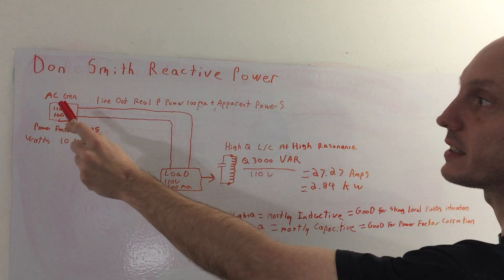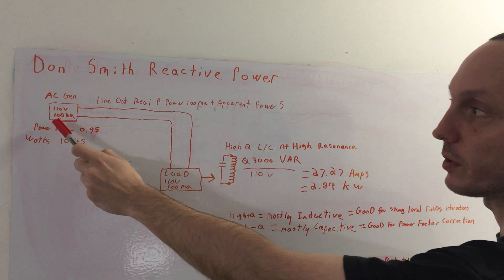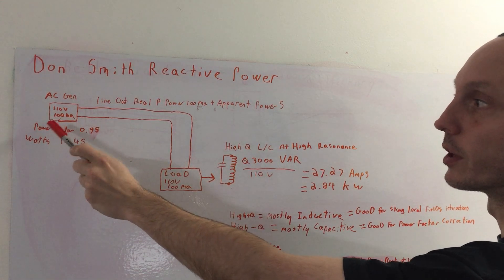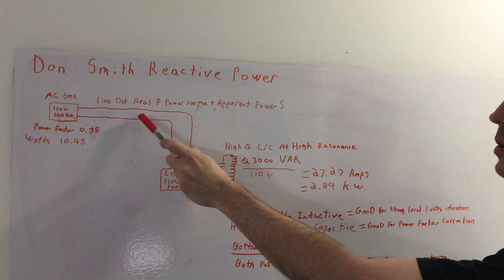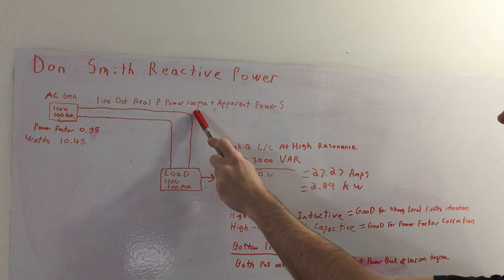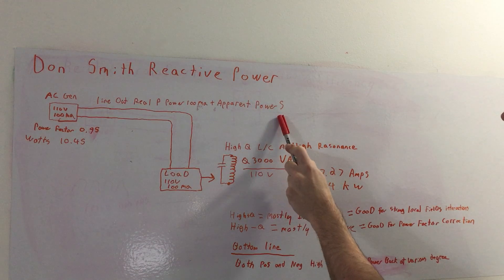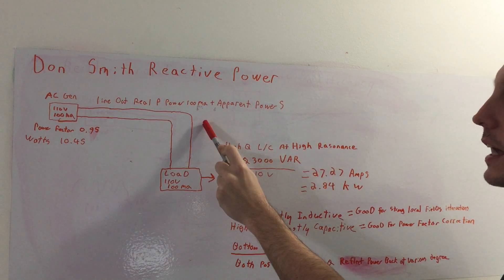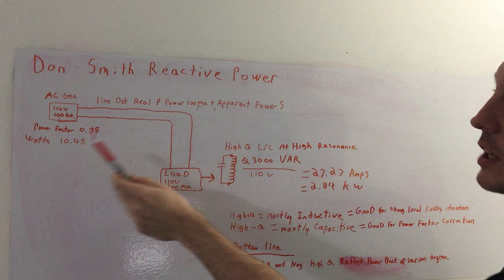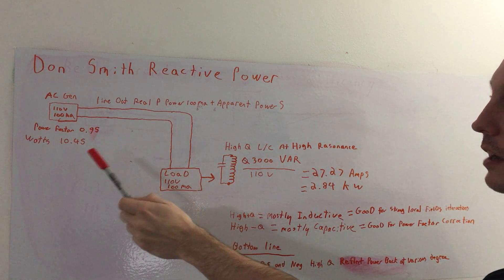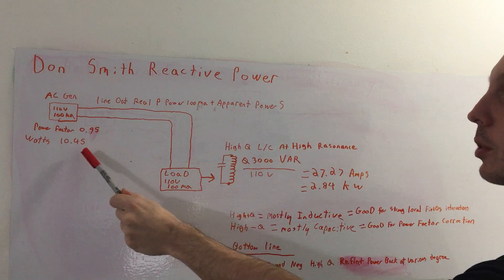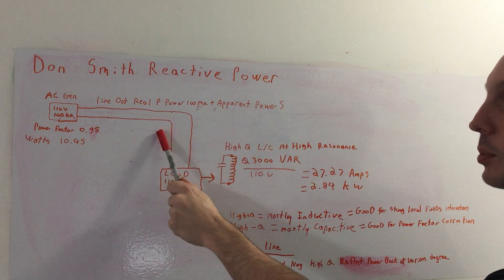So let's say we have our AC generator. It's our very own very small 110 volt, 100 mA for this example. So what you get here is the line out which is real power, which is 100 mA, plus whatever apparent power in S may be back on the line, which I'll get into in a moment. So essentially if we use a typical power factor of 0.95, this amounts to about 10.4 watts on the output here.